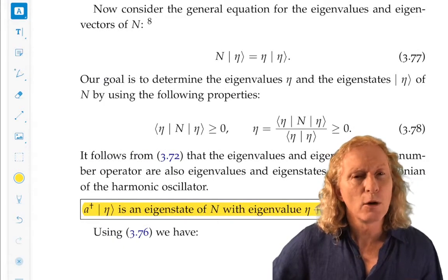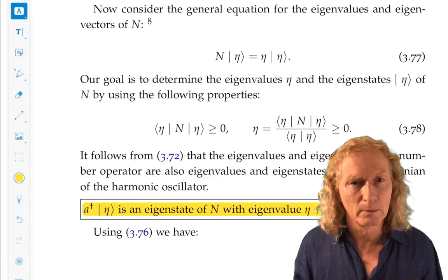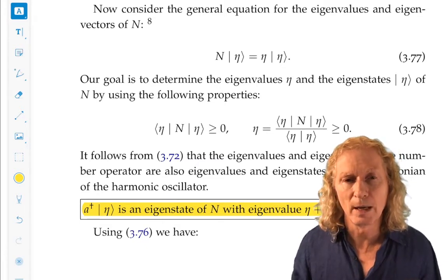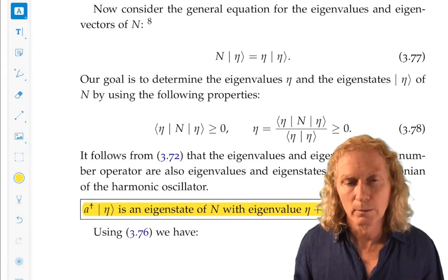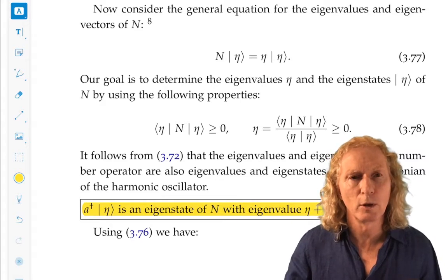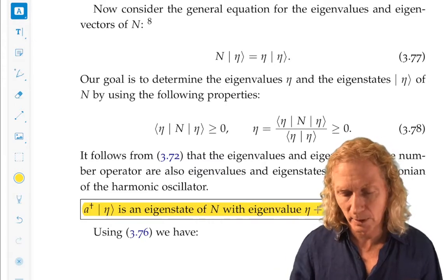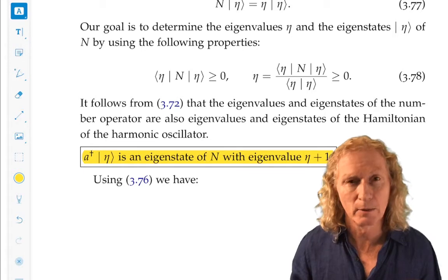So if we know what the lowest eigenstate is, because remember there is a lowest eigenvalue corresponding to h bar omega over 2, if we knew the value for that, then we could just act on it over and over again with the raising operator and get all of the eigenstates corresponding to all of the higher eigenvalues.